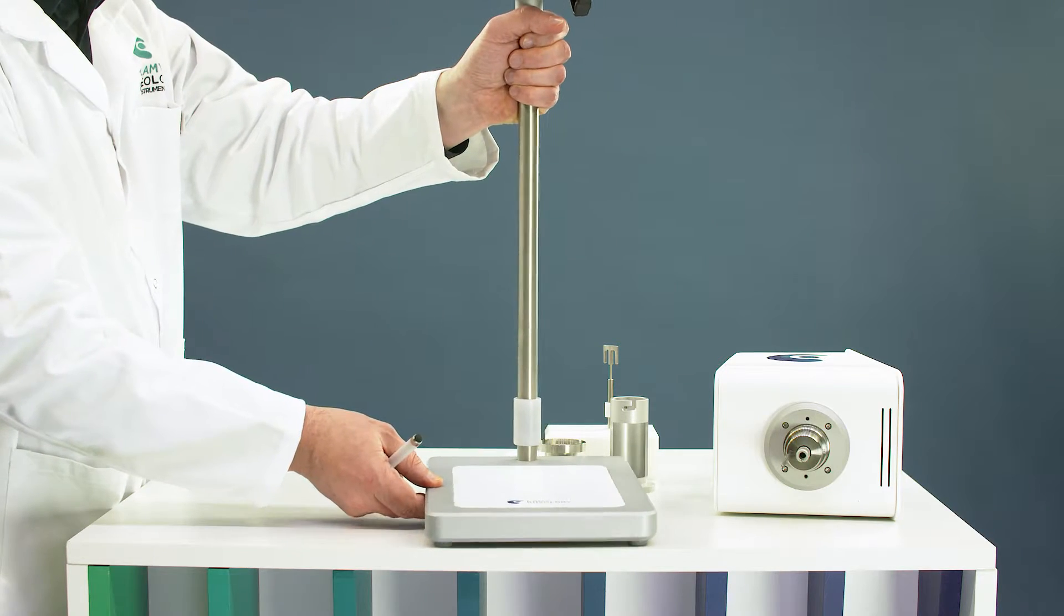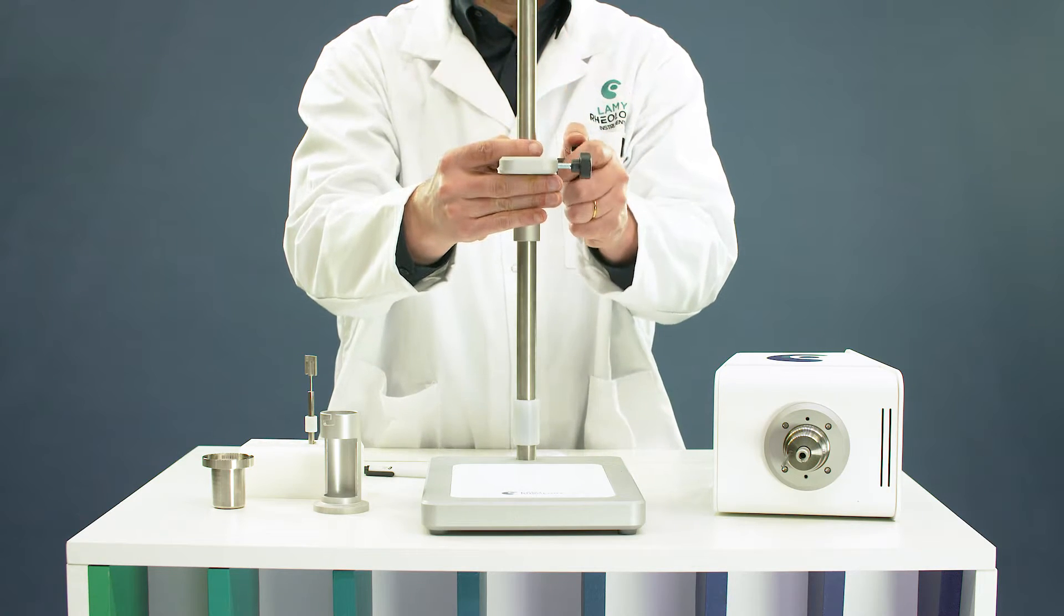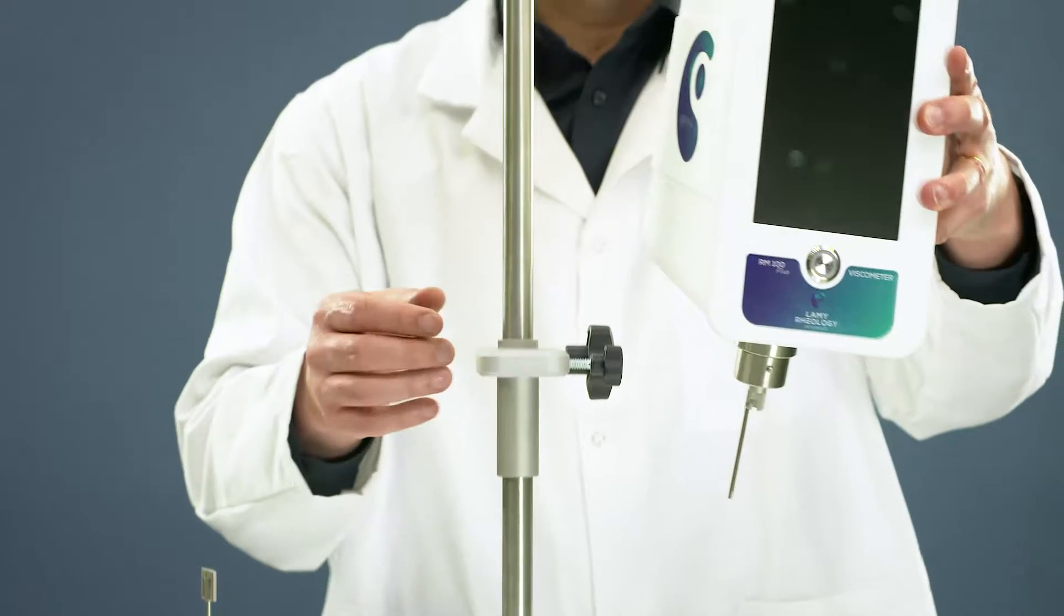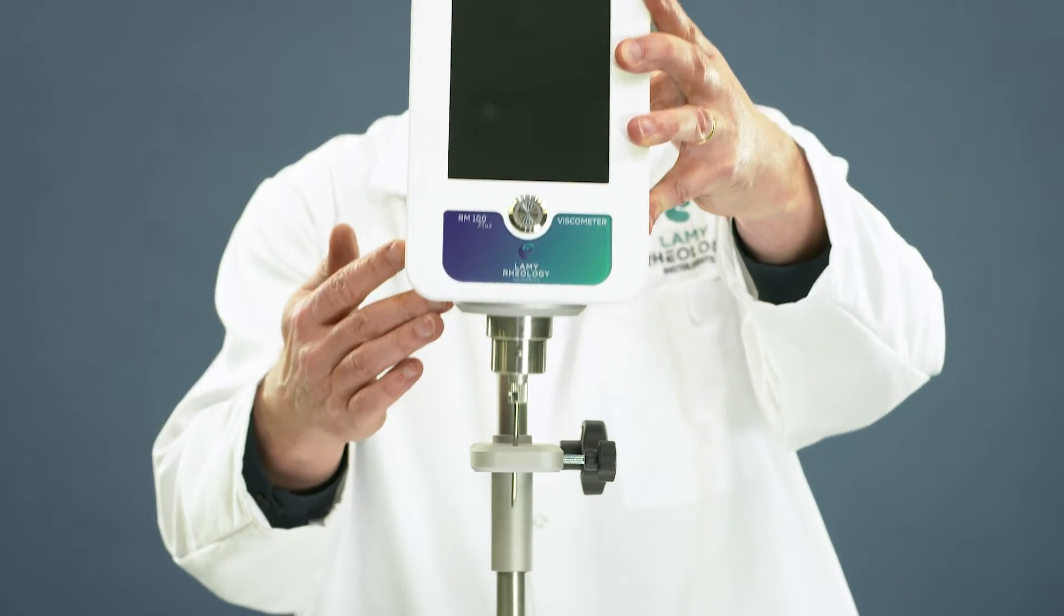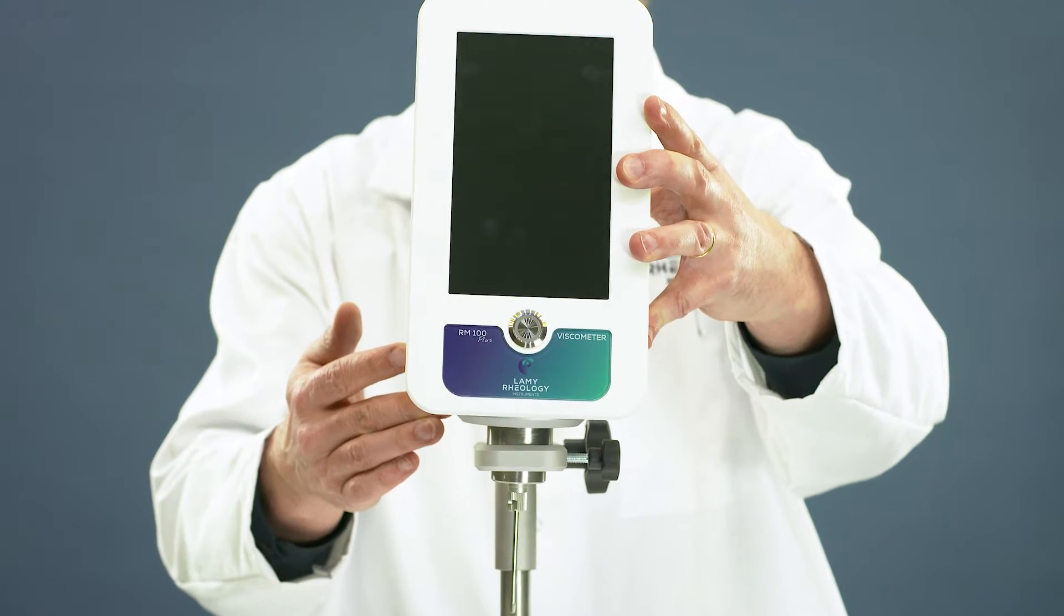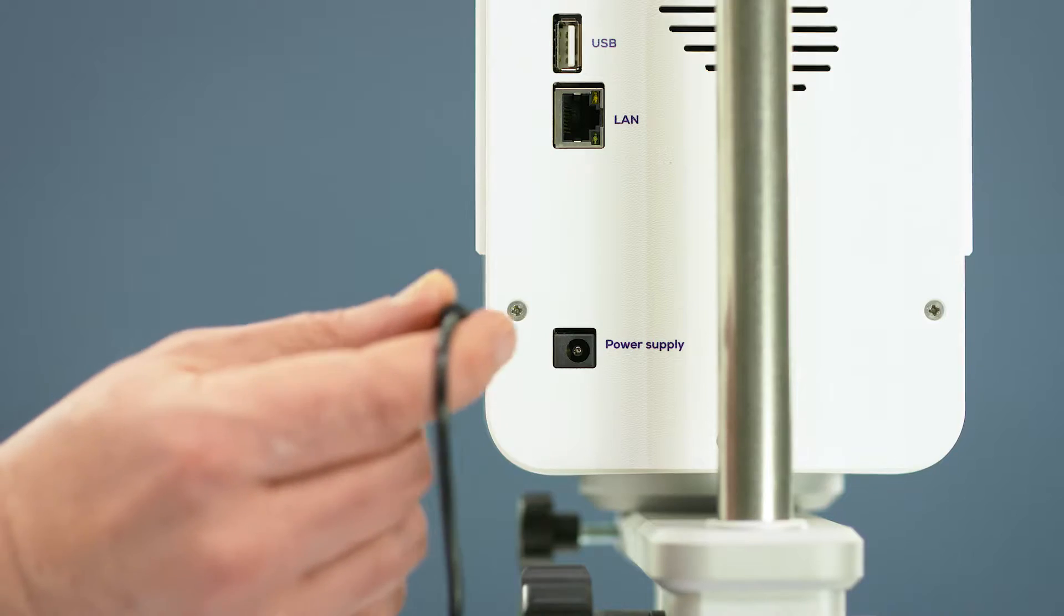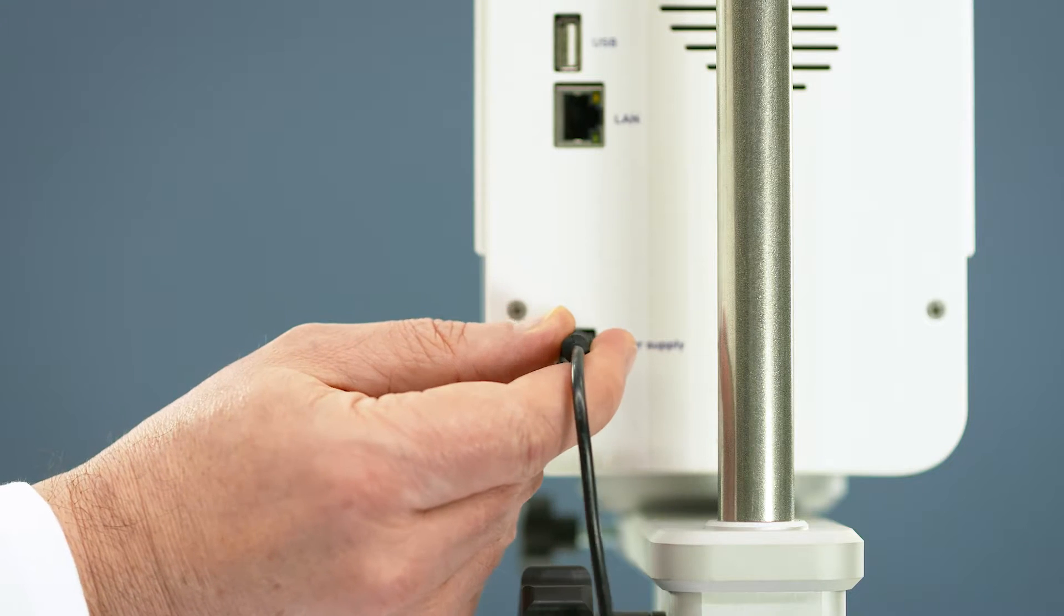Take the measuring head and install it on the arm and lock the measuring head with the screw. Plug the power supply on the rear panel of the device. Switch on the viscometer.